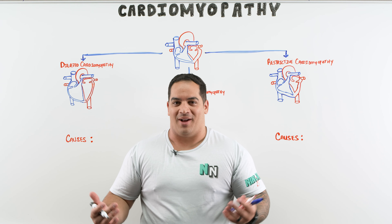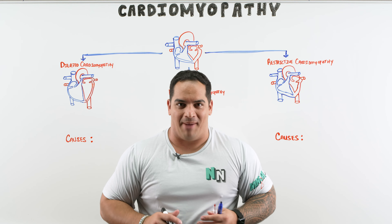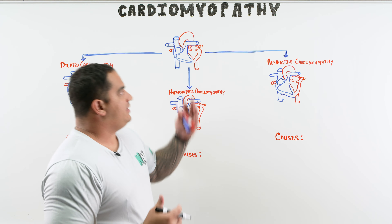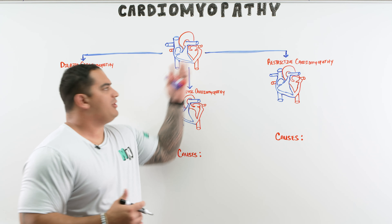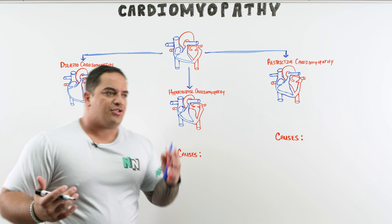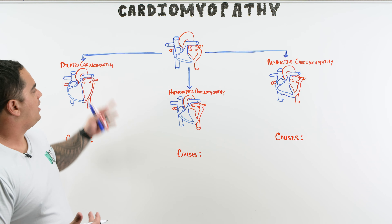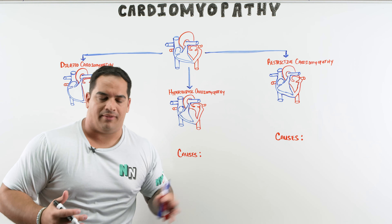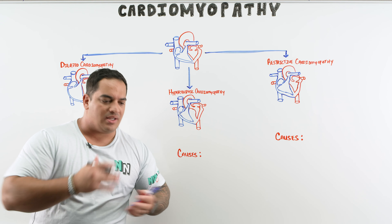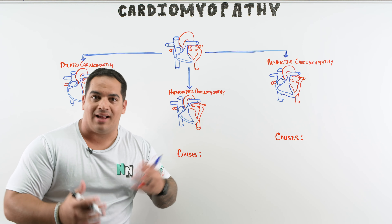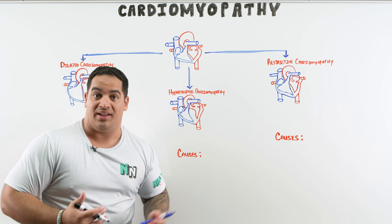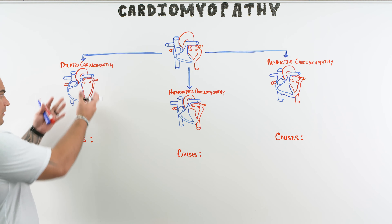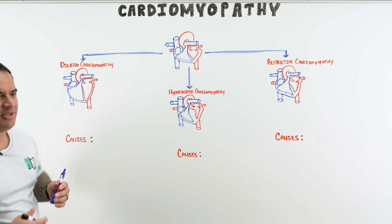Cardiomyopathy is essentially a disease process of the myocardium. There are three types: dilated, hypertrophic, and restrictive. We need to understand the pathophysiological difference between these three. With dilated — as the name suggests — you have very dilated ventricles, but we need to understand what causes that ventricular dilation.